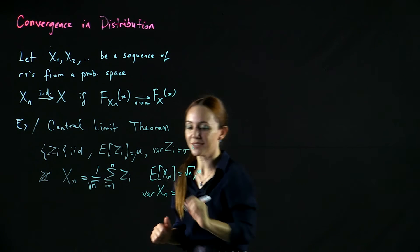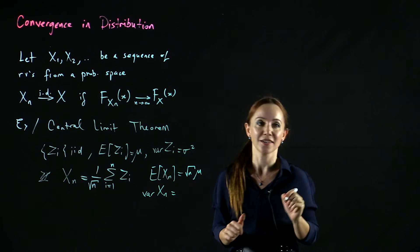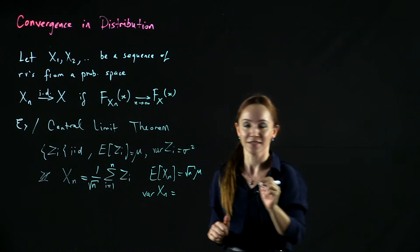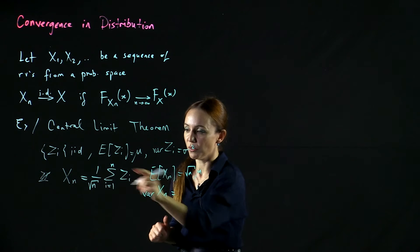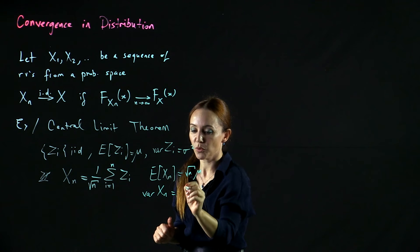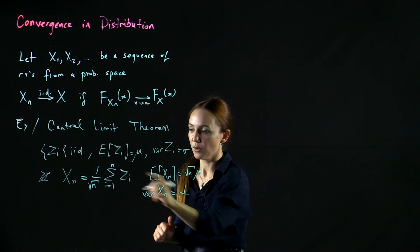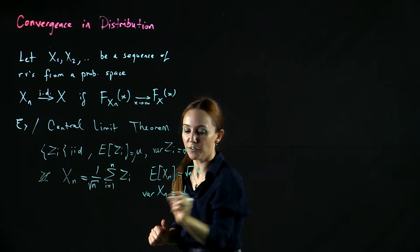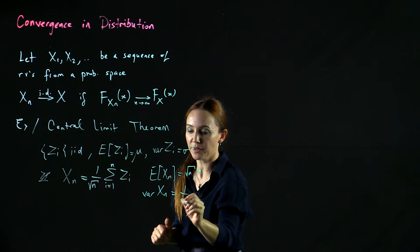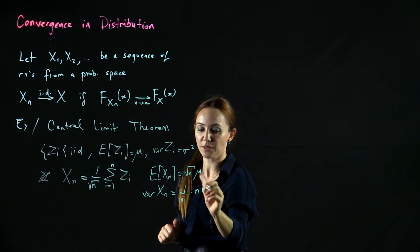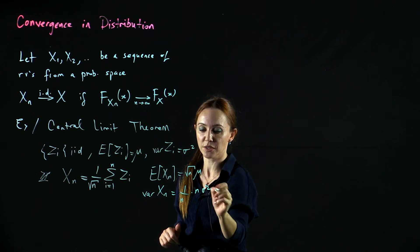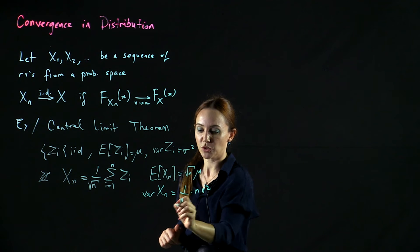The key here is that the variance stays constant, because the variance of 1 over square root of n times the sum — the square root of n gets squared — giving 1 over n times n times sigma squared, which equals sigma squared.